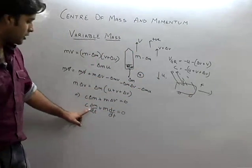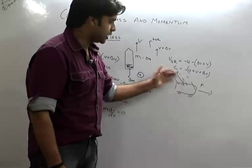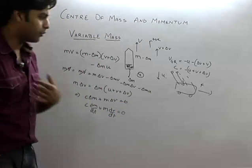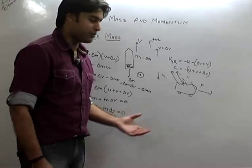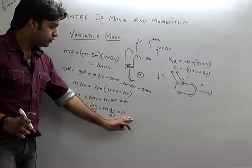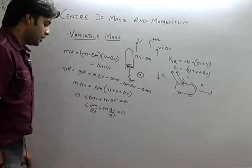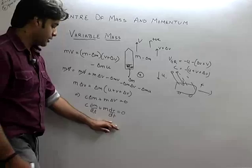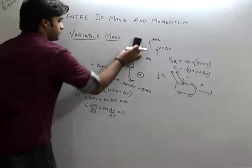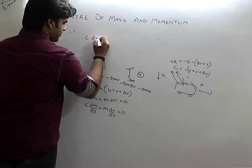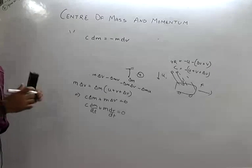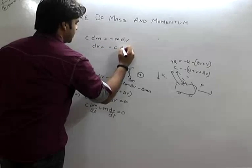The mass can increase as well. If mass increases, you will get some velocity accordingly. Generally under IIT, the variable mass concept applies. When external force is zero, F = dP/dt = 0. We can write C·dM equals minus M·dV, and rearranging: dV equals minus C·dM divided by M.